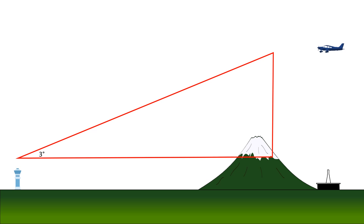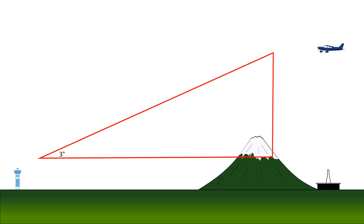We also don't want to arrive at pattern altitude just as we're crossing over the airport. We'd like a bit of buffer, maybe arriving at pattern altitude three miles out. This will give us time to bleed off speed and configure. If you're in a heavier, faster aircraft, you may want to give yourself even more buffer.